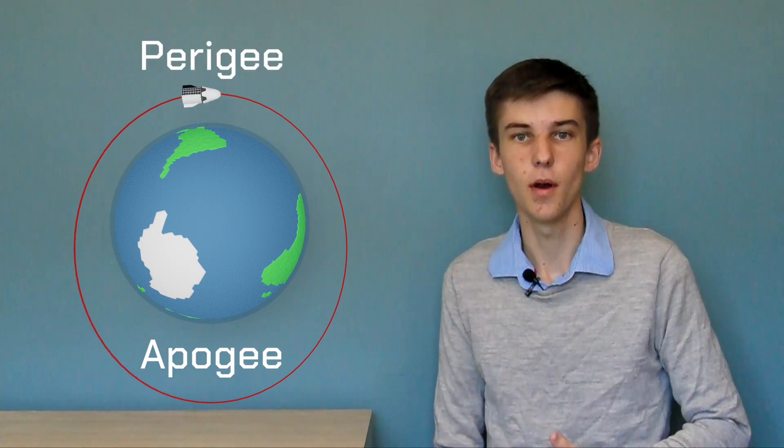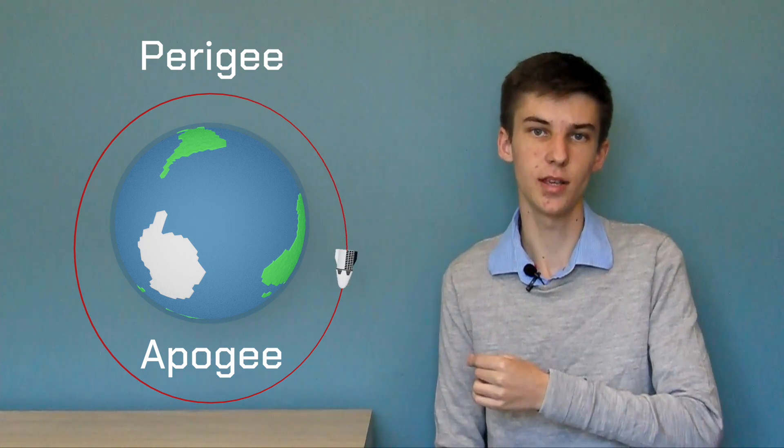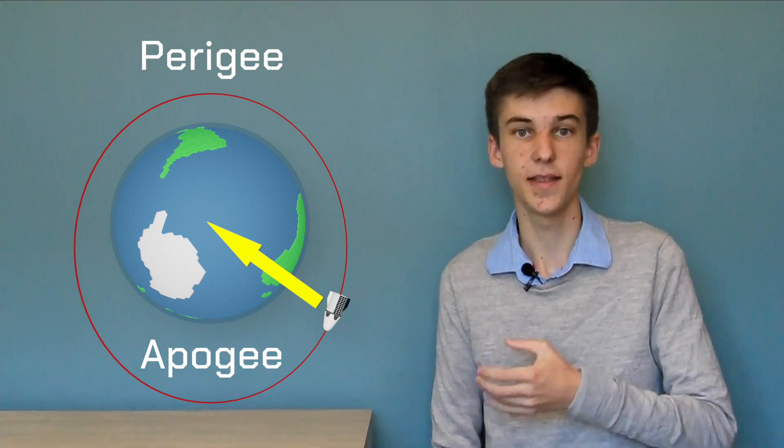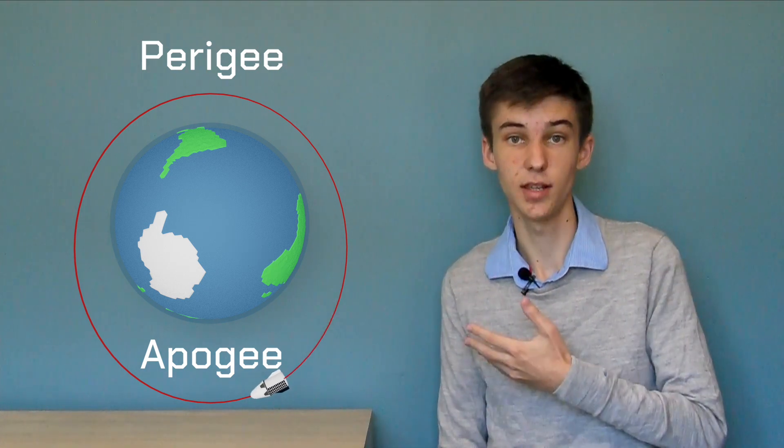We've got the highest point above Earth, which is called apogee, and the lowest point above Earth, called perigee. As we go uphill towards apogee, gravity is pulling us like this towards the centre of Earth, which slows us down. That means that by the time we get to apogee, we are going our slowest.